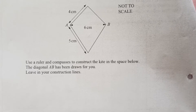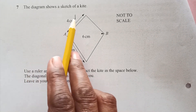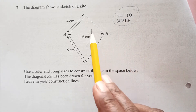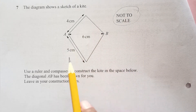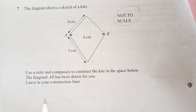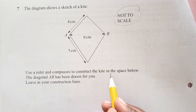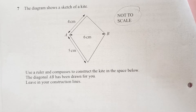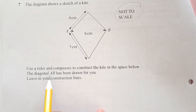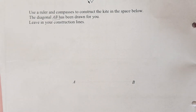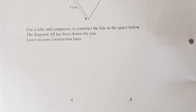The first question: the diagram shows a sketch of a kite, and it is written 'not to scale'. That means this is just a rough diagram. Use a ruler and compasses to construct the kite in the space below. The diagonal AB has been drawn for you. Leave your construction lines. We need to draw all these measurements accordingly.